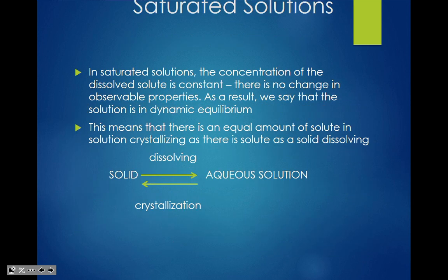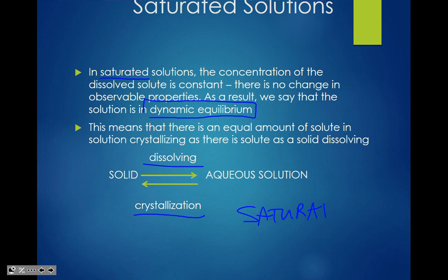A saturated solution is one where the concentration of the dissolved solute is constant with no change in observable properties. As a result, it's said to be in dynamic equilibrium. This means there is an equal amount of solute crystallizing as there is dissolving — the dissolving and recrystallizing happen at the same time and at the same rate. Any extra solute you add will just crystallize.